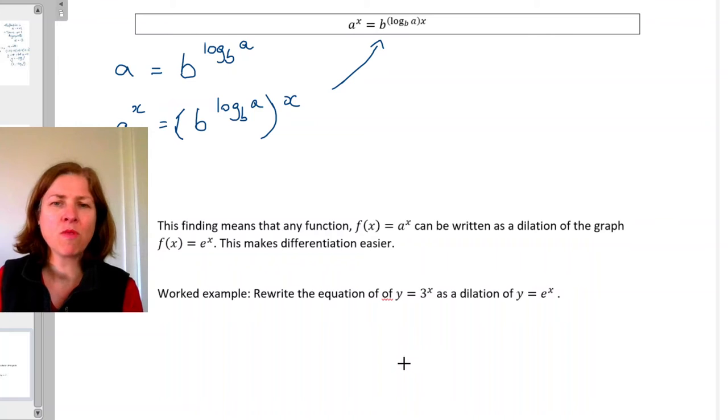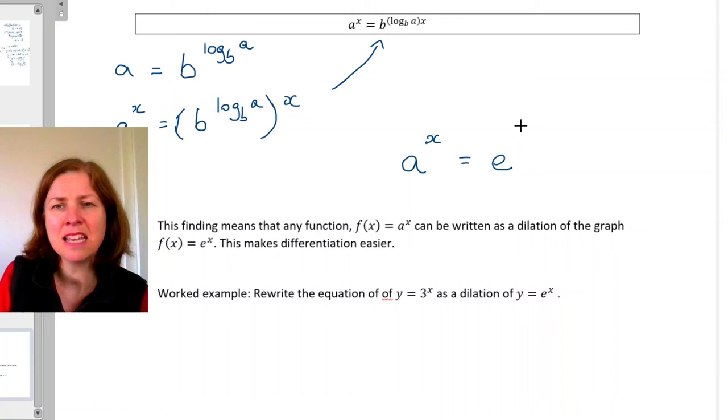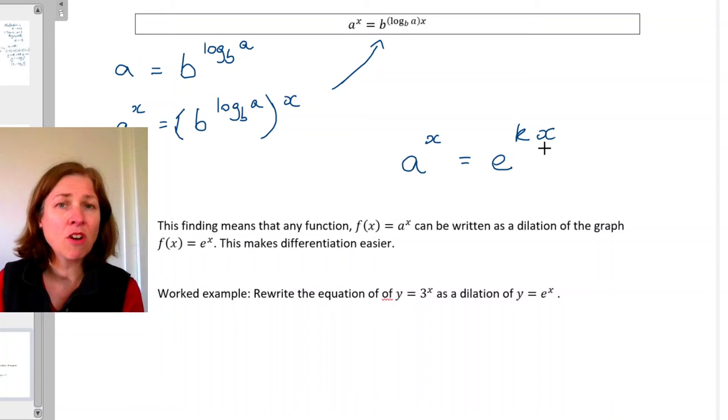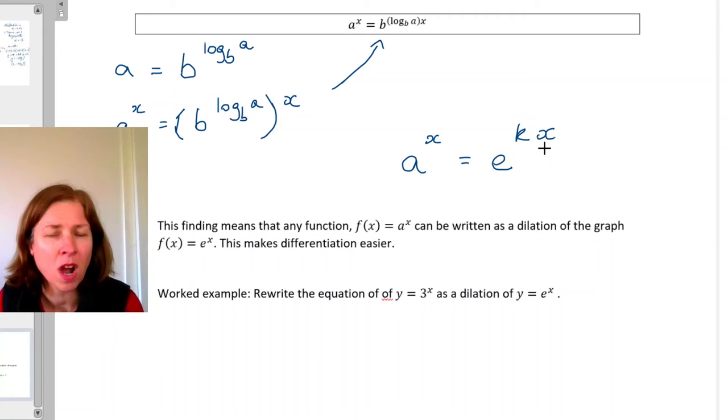Which means, and this is its most common use, that I can rewrite any function f of x equals a to the power of x as e to the power of kx. So a to the power of x can be rewritten as e to the power of kx, and one of the most useful things about that is in the areas of calculus. If I'm differentiating e to the power of kx, then I've got a simple rule. I don't have a rule for differentiating a to the power of x. I need to rewrite it in this form and that is why we would do that.